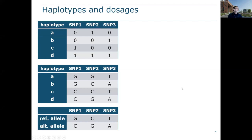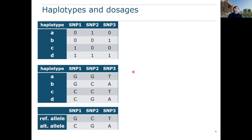For instance, in haplotype A, SNP 1 has the G allele. We see that the G allele is the reference allele, and the reference allele converts to zero. In this way, we can convert all the scores to zeros and ones, which makes it a more general approach for doing calculations with haplotypes.